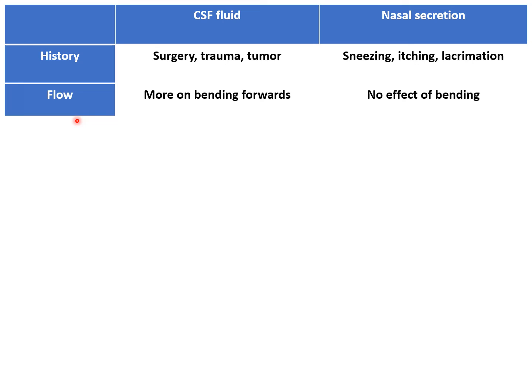Then we need to ask about the flow of the nasal discharge. When the patient says that the nasal discharge is more on bending forwards, it is suggestive of CSF leak or CSF rhinorrhea. If there is no effect of bending on the nasal discharge — that is, it is continuous irrespective of the position of the head — then it is some nasal pathology like rhinitis.